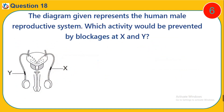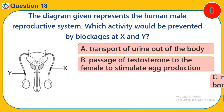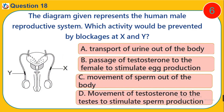Question 18. The diagram given represents the human male reproductive system. Which activity would be prevented by blockages at X and Y? A. Transport of urine out of the body. B. Passage of testosterone to the female to stimulate egg production. C. Movement of sperm out of the body. D. Movement of testosterone to the testes to stimulate sperm production.